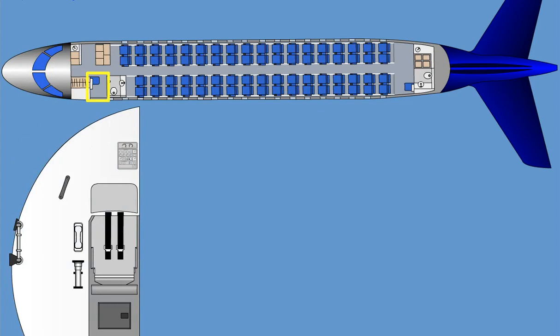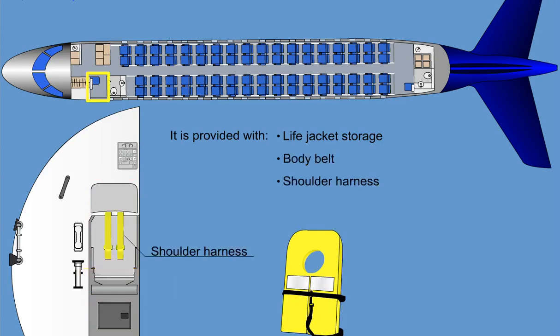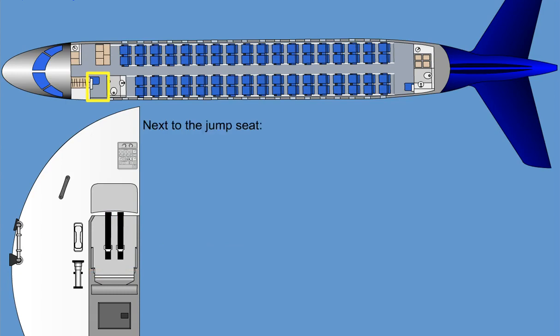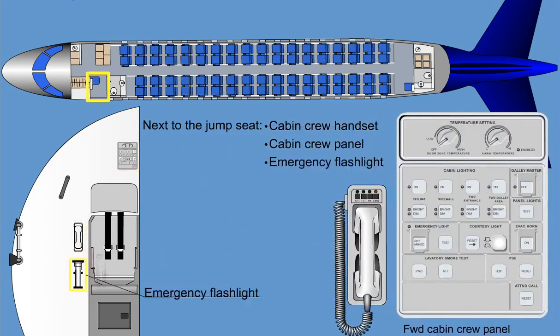The forward cabin crew station is furnished with an aft-facing, self-stowing seat mounted on the aft surface of the forward wardrobe. It is provided with life jacket stowage underneath, a body belt, and shoulder harness. Next to the jump seat, a cabin crew handset, a cabin crew panel, and an emergency flashlight are mounted on the wall.